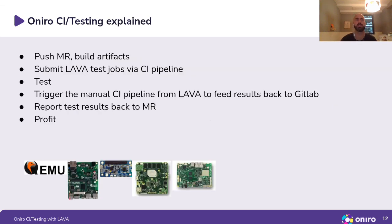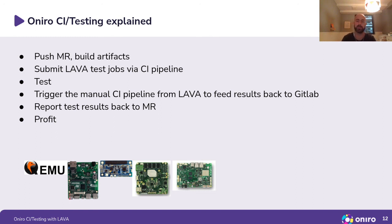So briefly: the developer pushes a merge request, builds artifacts, jobs are submitted via the CI pipeline, then we test, trigger the manual CI pipeline, feed the results back to GitLab, and report test results back to the merge request — which will fail or pass depending on whether there are failed tests or not. You can also set some sort of threshold for any failures.